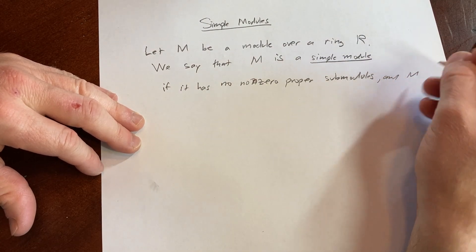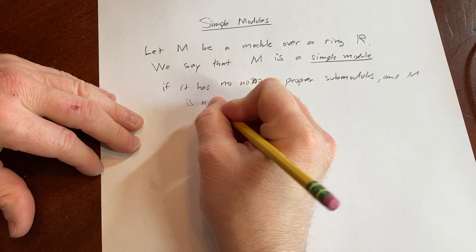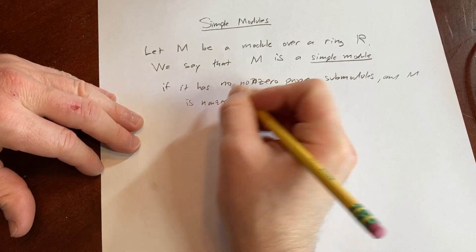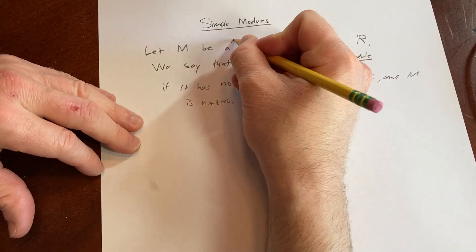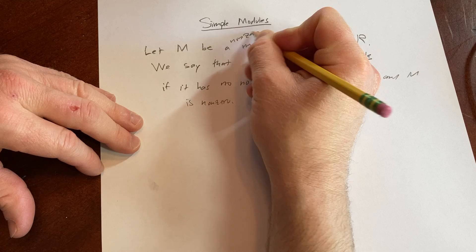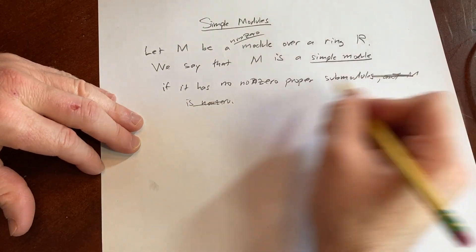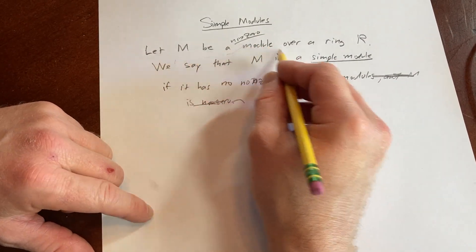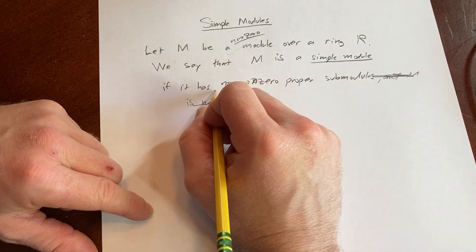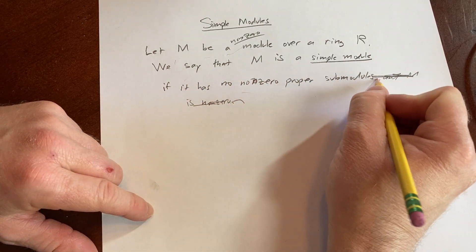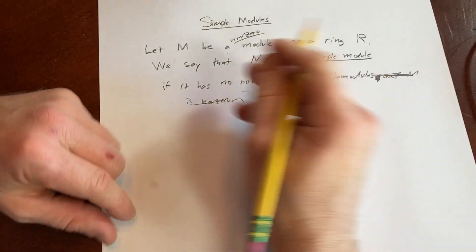And M is non-zero. I forgot to say that M is a non-zero module. So let M be a non-zero. Let's do that. And that's a little bit better. So if M is a non-zero module over a ring R, we say it's a simple module if it has no non-zero proper sub-modules.